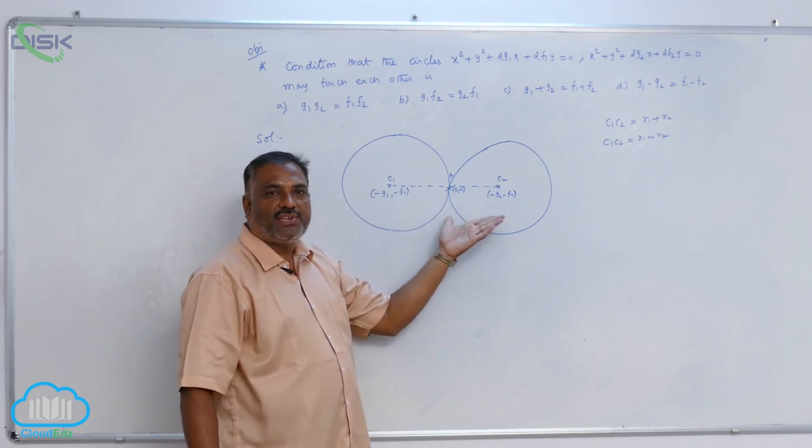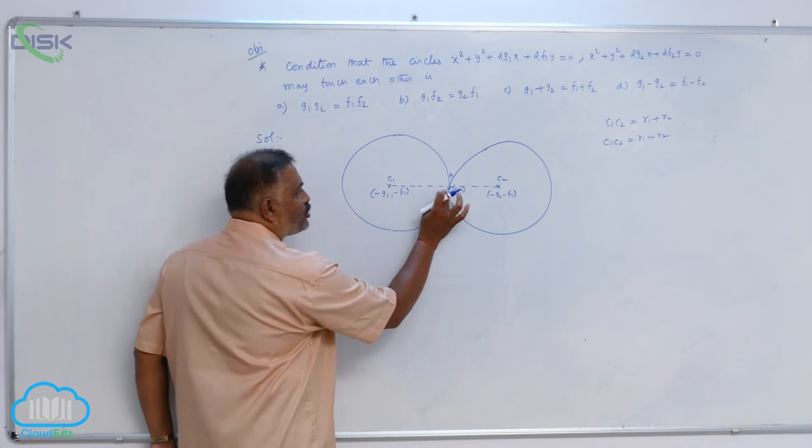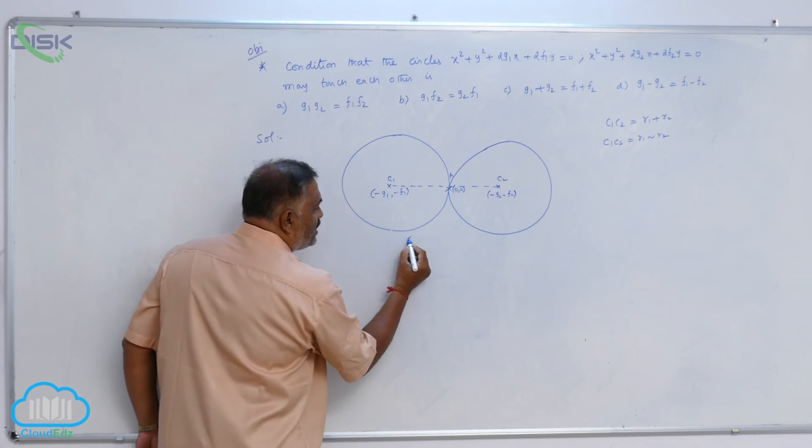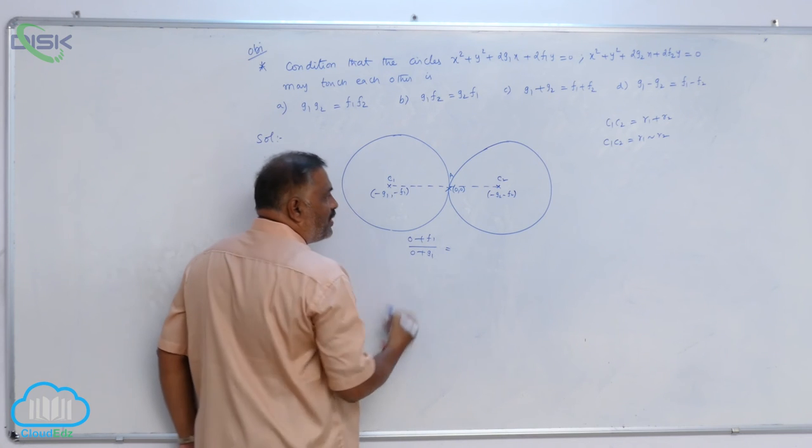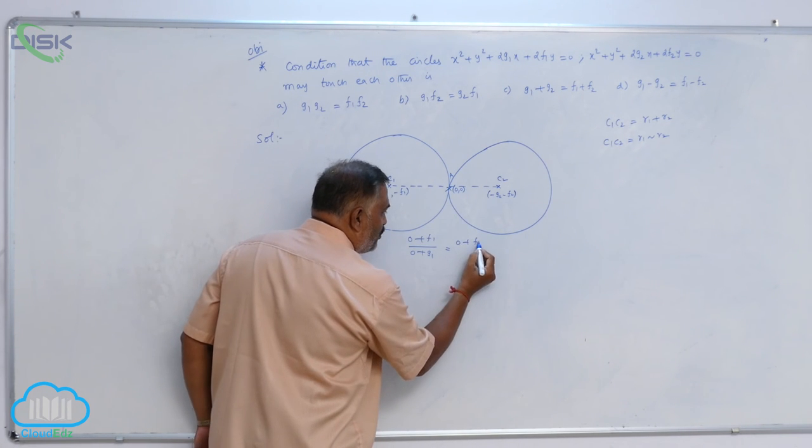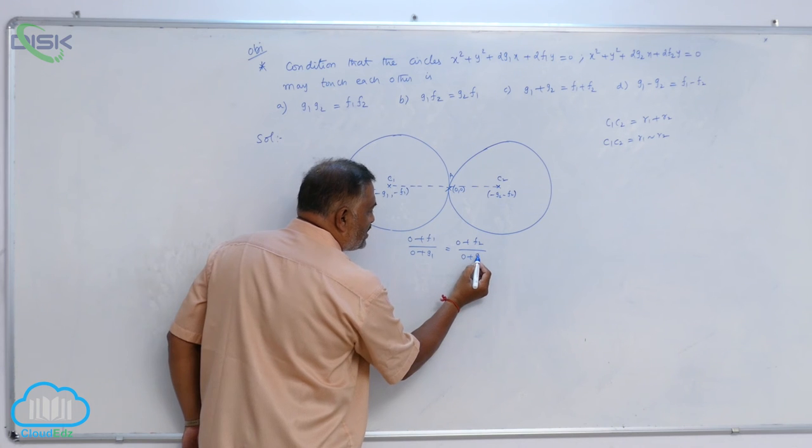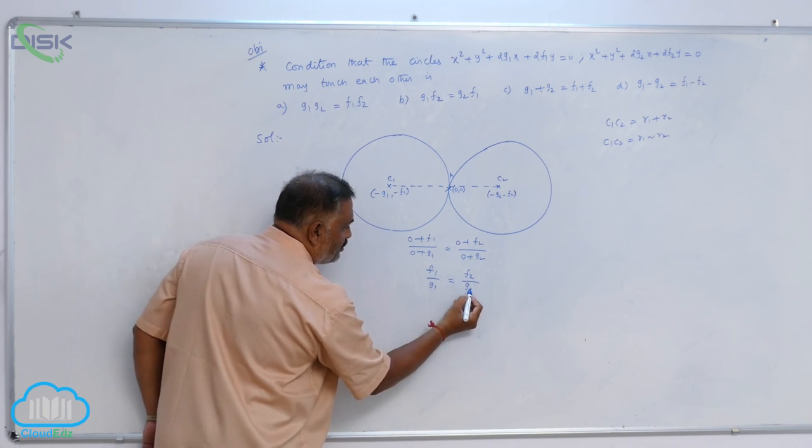When three points are collinear, you can claim slopes are equal. So, slope of this one is given by 0 plus f1 by 0 plus g1 is equal to, again slope of this line, 0 plus f2 divided by 0 plus g2. So, f1 by g1 is equal to f2 by g2.